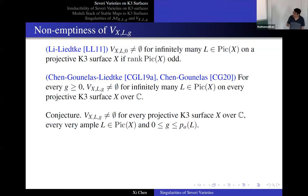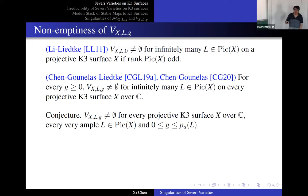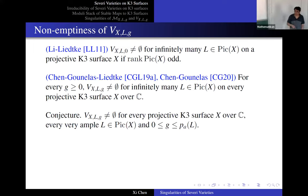The rank two case: we eventually finished this rank two case. We show that not only for rational curves, but for any curve of genus g, you can find infinitely many such components of this Severi variety.